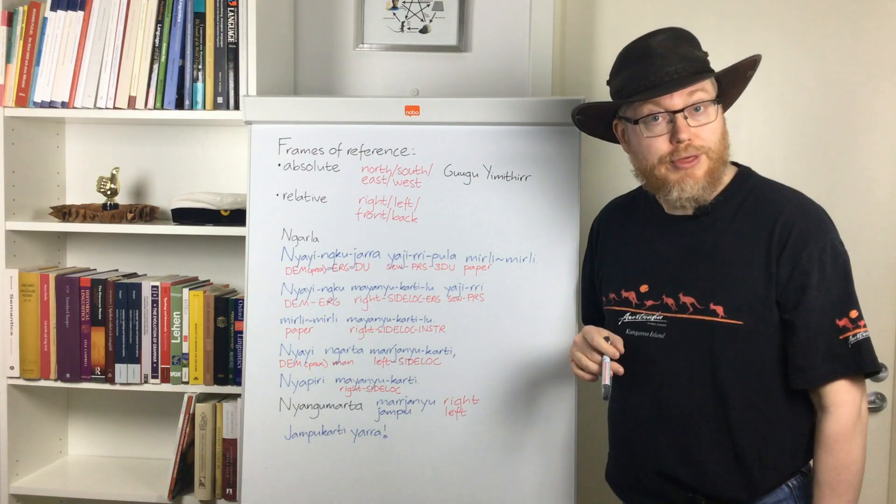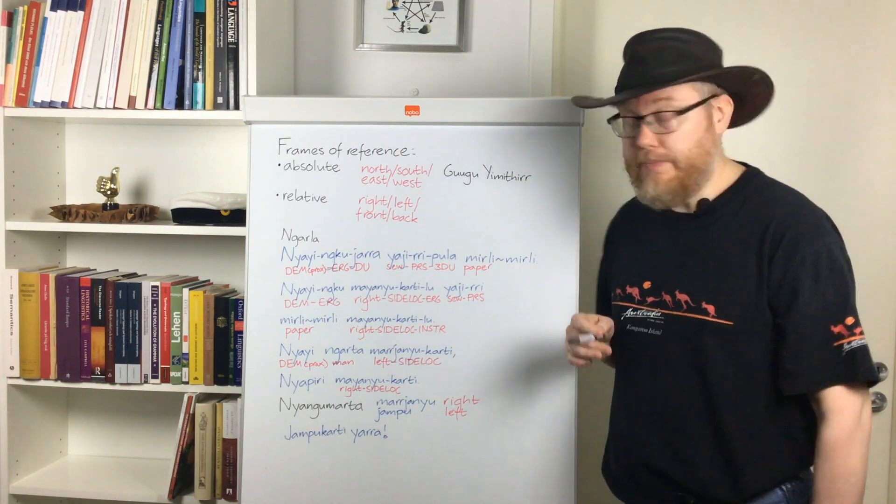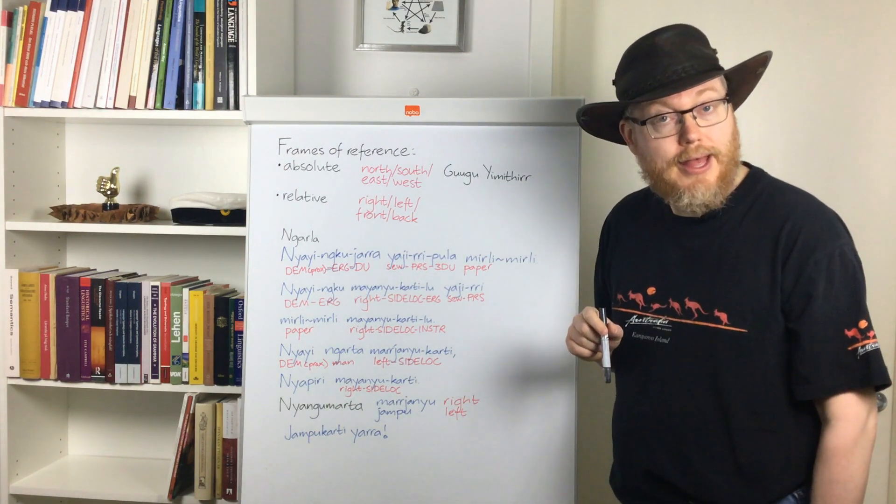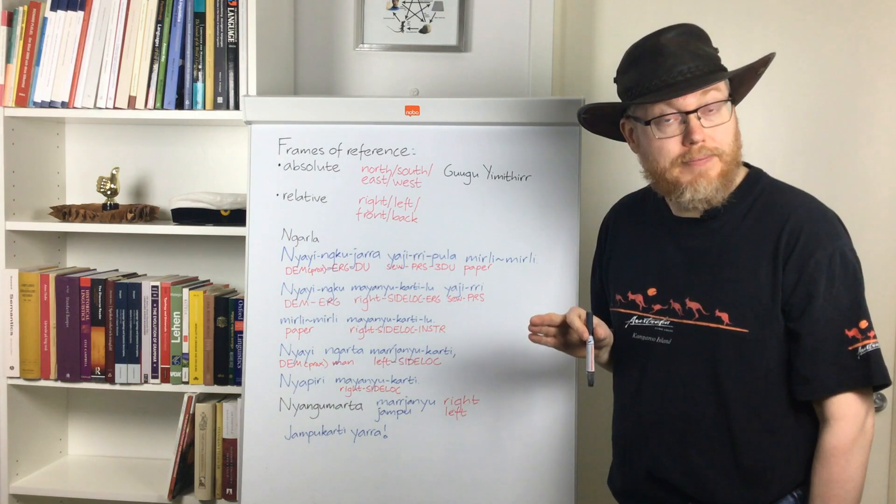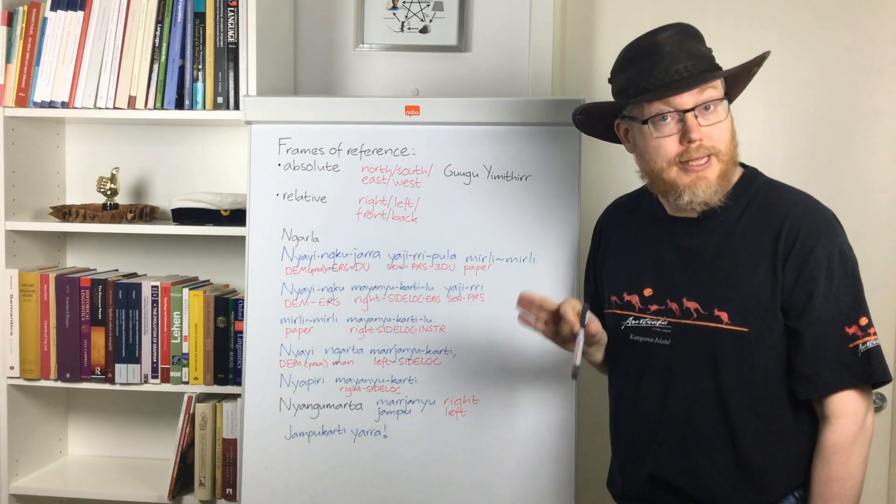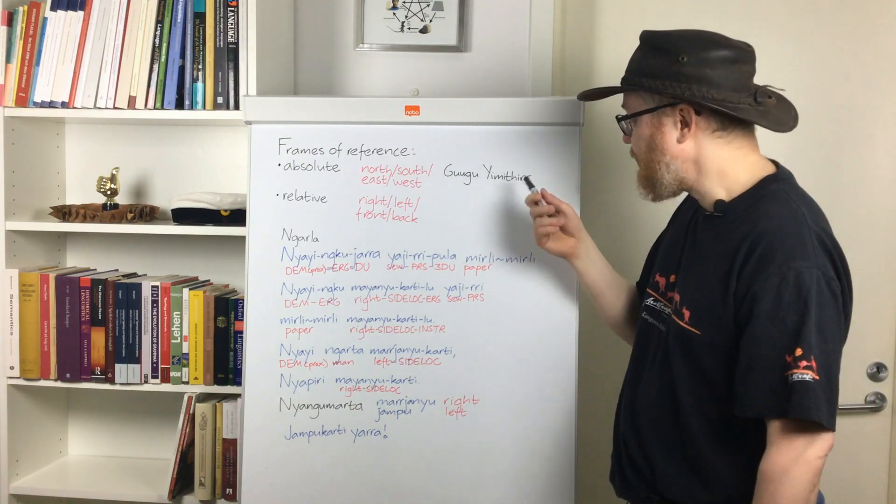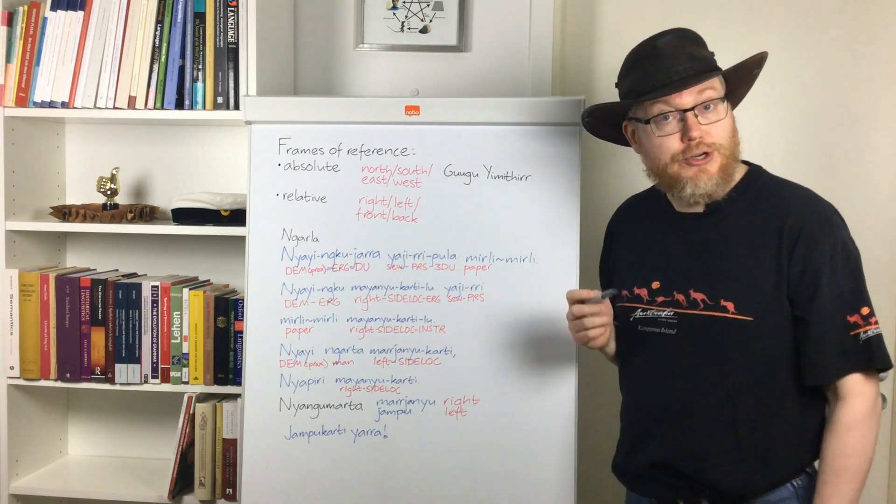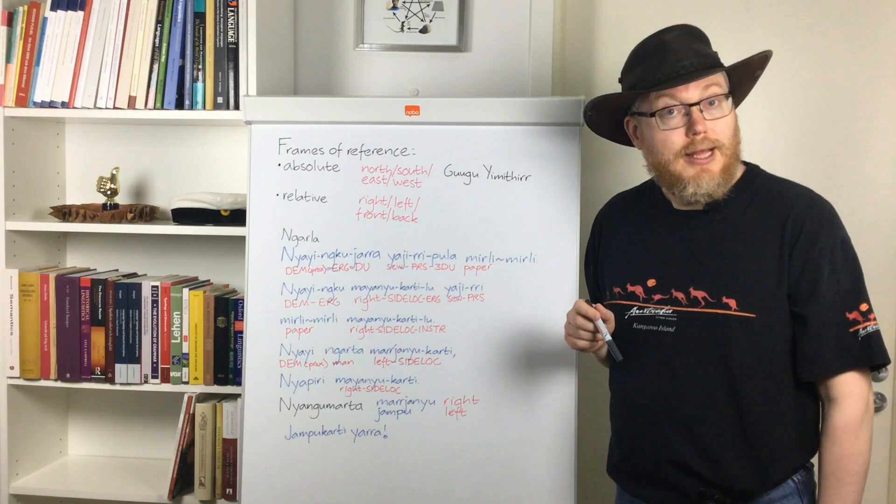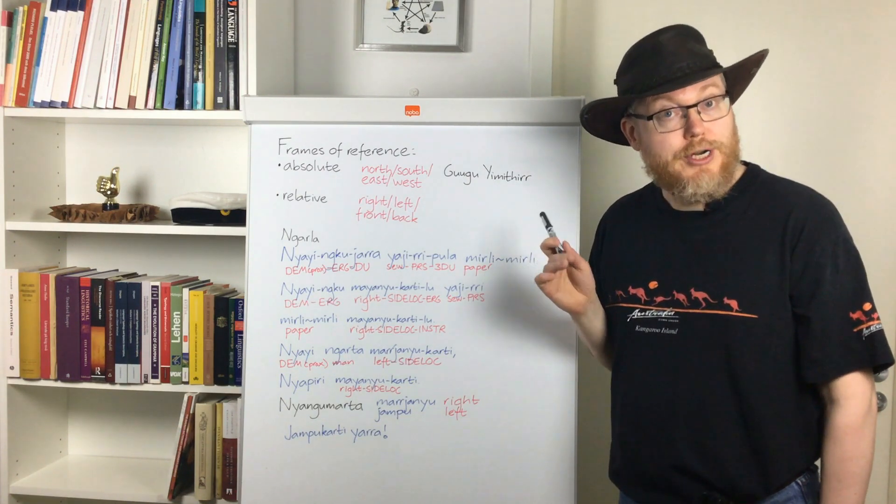Well I thought I cannot let this topic go without mentioning the language Kugu Jimittir which is quite famous and its speakers are quite famous in this context. This is a language from Northeastern Queensland, a Pamanyungan language, and it is the language from which we get the word kangaroo.